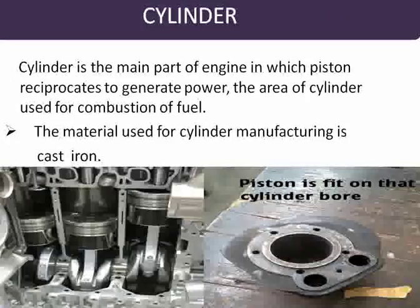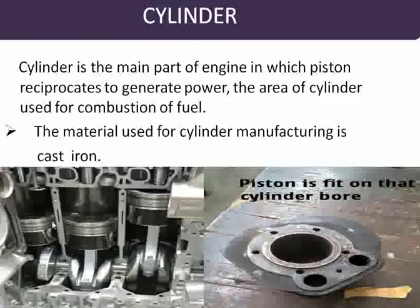The cylinder is the main part of the engine in which the piston reciprocates to generate power. The area of the cylinder is used for the combustion of fuel. The material used for cylinder manufacturing is cast iron. Here you see in the picture that is the cylinder portion.